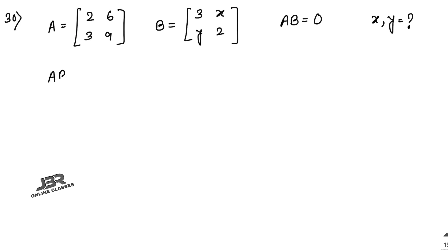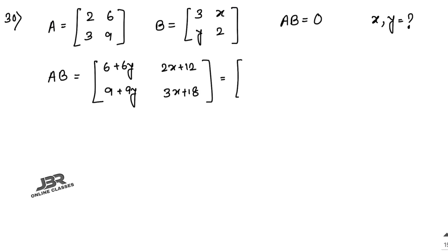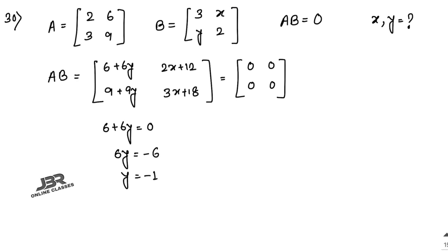Multiply A into B: the result is [6+6y, 6+6y... 2x+12, ...]. Comparing with the zero matrix: 6 plus 6y equals 0 gives y equals minus 1. And 2x plus 12 equals 0 gives 2x equals minus 12, so x equals minus 6. Therefore x equals minus 6 and y equals minus 1. That is your answer.